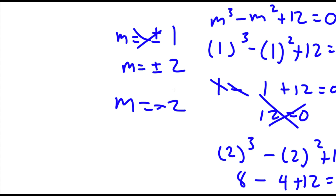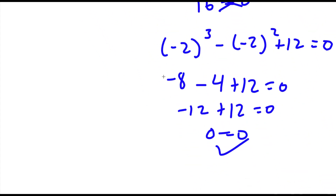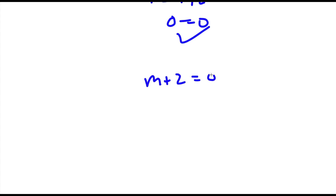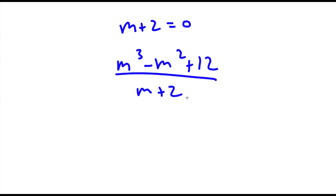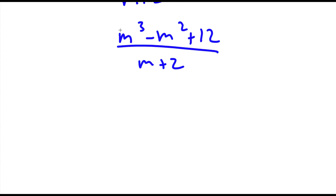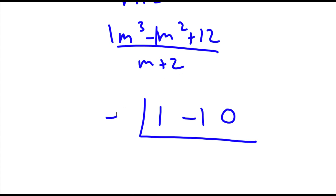Now from here, since I know m is equal to negative 2, this must mean that m plus 2 is equal to 0. So I'm going to divide out m to the power of 3 minus m squared plus 12 by m plus 2, because we already know m plus 2 equals 0. Using synthetic substitution, we look at the coefficients: we have 1, negative 1, 0, and 12. And from m plus 2, we use negative 2.